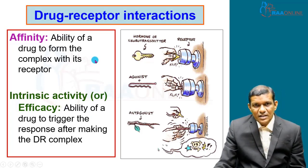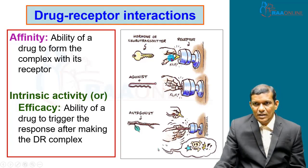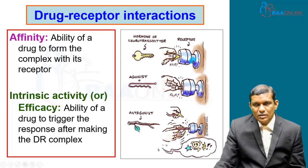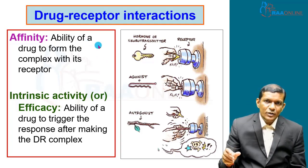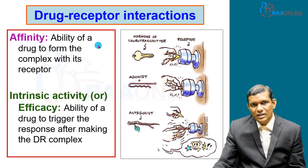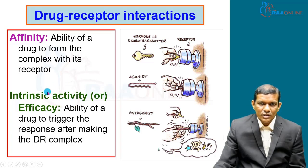Affinity is the ability of a drug to form a complex with its receptor. A simple analogy: the key is the drug molecule — like a hormone or neurotransmitter — and the receptor is the lock. When the key is able to fit into the lock, that is called affinity. So a drug's ability to bind to the receptor — just the binding alone — is called affinity.